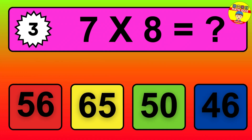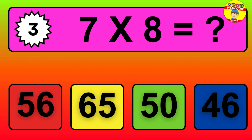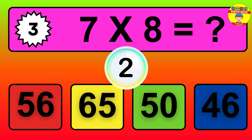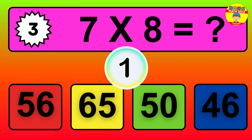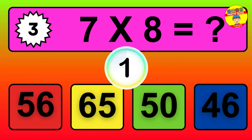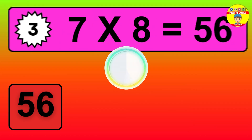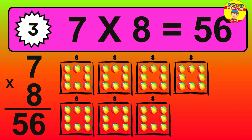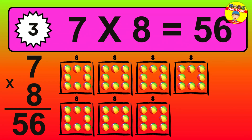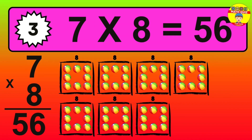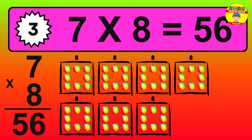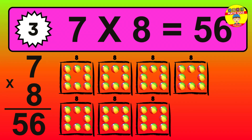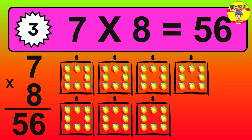Question 3. 7 times 8 equals what? The answer is 7 times 8 is 56. To calculate, we have 7 groups with 8 balls each one. So, how many balls do we have? 56 balls.